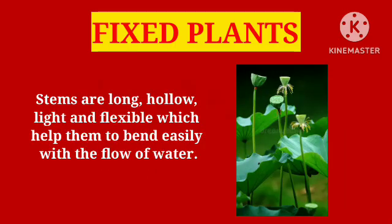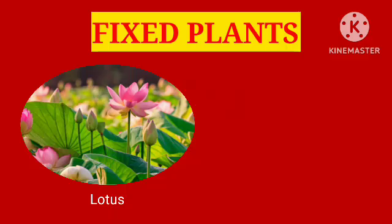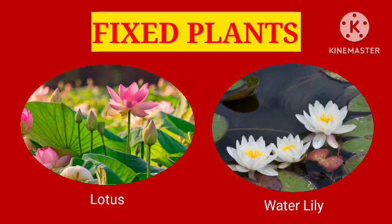Their stems are long, hollow, light, and flexible, which help them to bend easily with the flow of water. Their large floating leaves allow them to absorb more sunlight to perform photosynthesis. Lotus and water lily are some fixed plants.